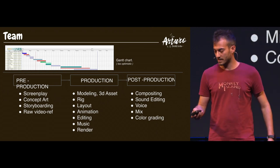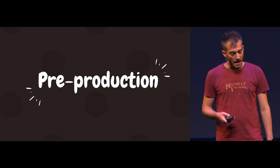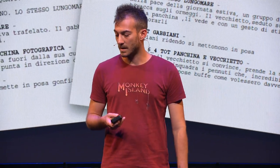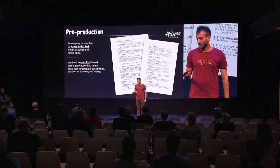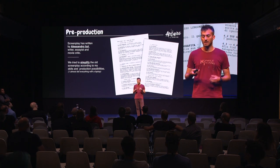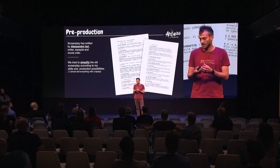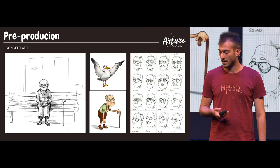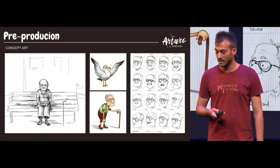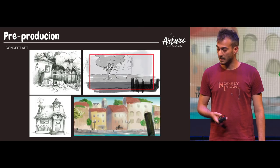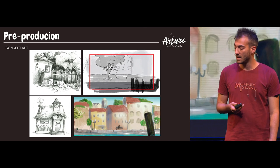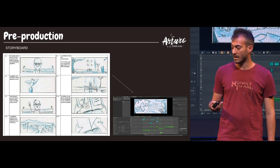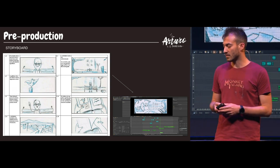I divided the production into pre-production, production, and post-production. In pre-production, I started by simplifying the old screenplay, written by Alessandro Itzi, a movie creator and writer. We tried to simplify it according to my skills and production possibilities. We started making concept art for the main character, lots of drawings for the seagull and facial expressions. We also changed a lot about the main character and did concept art for the environment. Then we went on to the storyboard — made by hand — and then passed it into Blender for our video board.